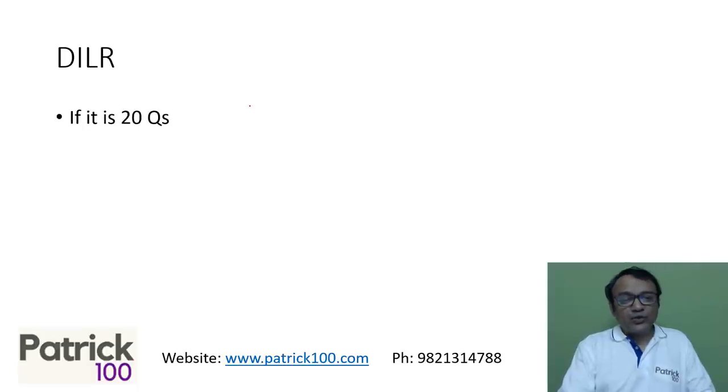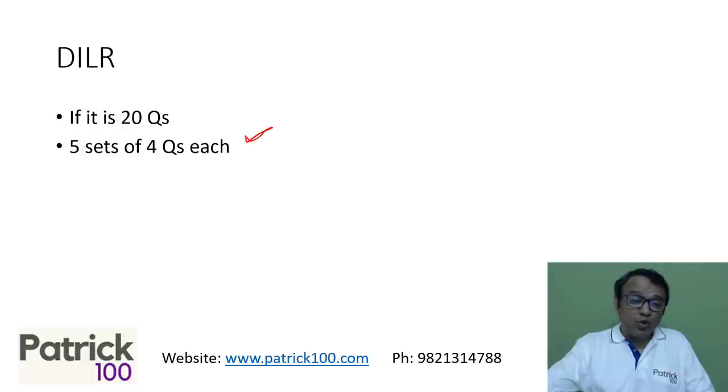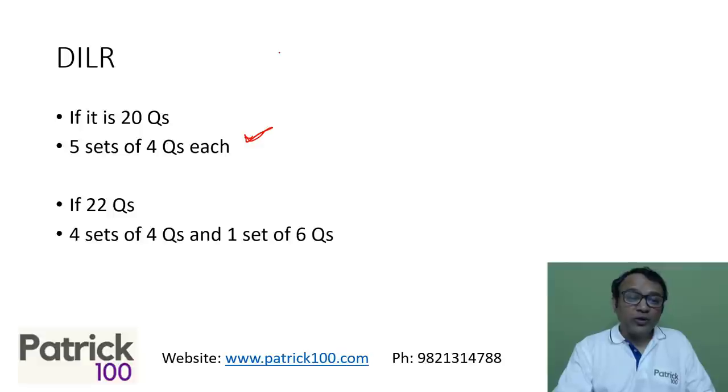DILR, if it is 20 questions, there could be five sets of four questions each, which is more likely. But if it is 22 questions, it could be four sets of four questions and one set of six questions. It is possible that 20 questions could also mean two sets of six questions and two sets of four questions, that is possible.